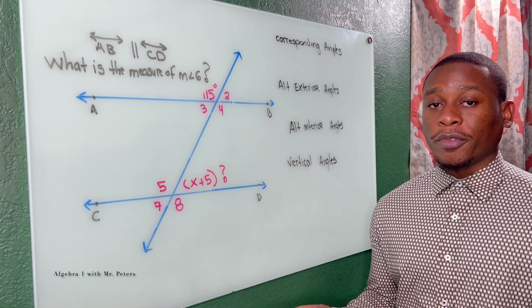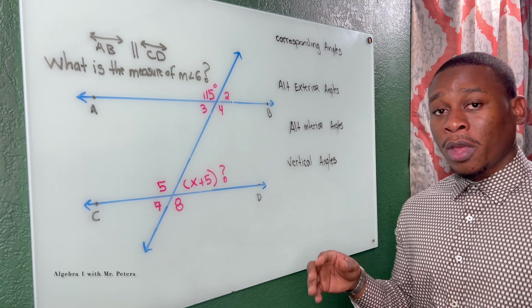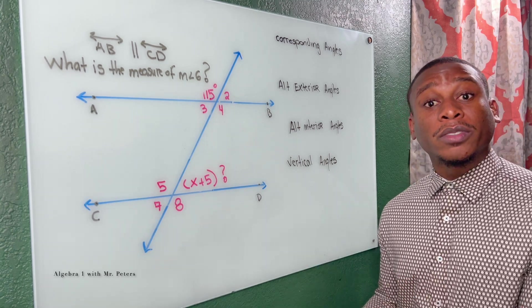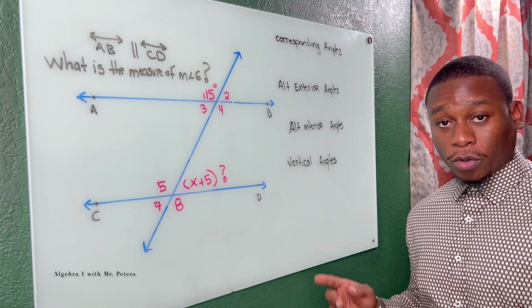I'm going to show you the four most common ones you'll see to make this a very easy topic. The four angle theorems we're going to review are corresponding angles, alternate interior angles, alternate exterior angles, and vertical angles.